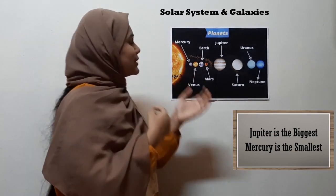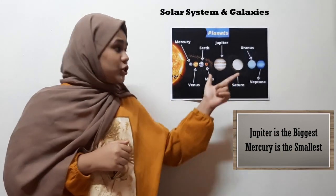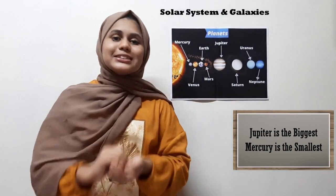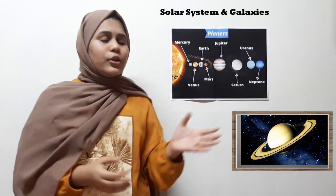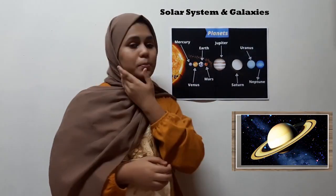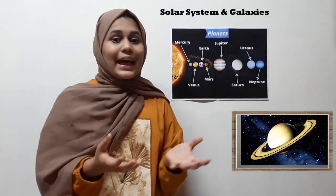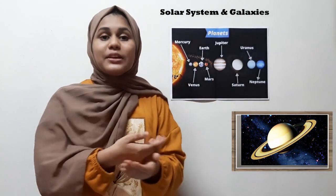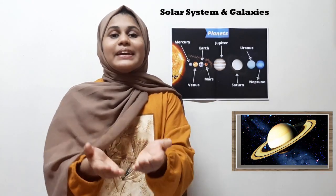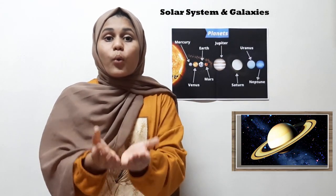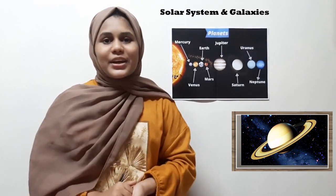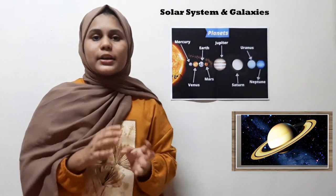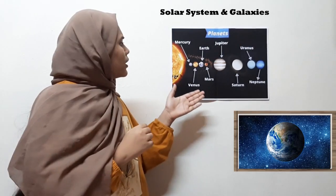By observing a picture of the planets, another thing that's clear is the biggest and the smallest planet. Jupiter is the biggest planet and Mercury is the smallest. Saturn has a special characteristic feature: it has a visible ring around it. Saturn is the only planet with a visible ring.